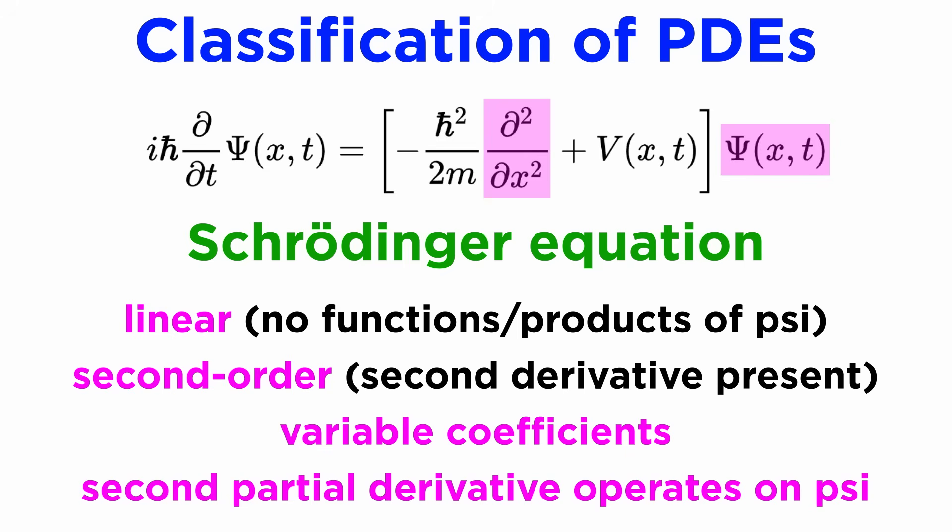If we expand the brackets on the right side, we would get a term with the second partial derivative of psi with respect to x, plus the function V times psi, where the lone partial derivative notation means that it is acting as an operator.